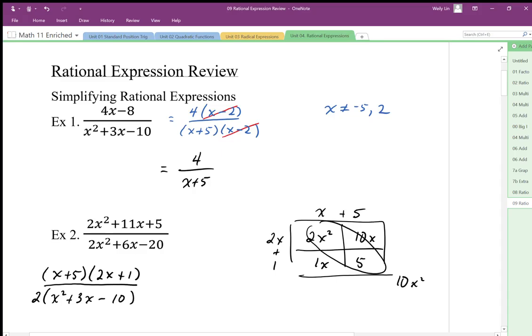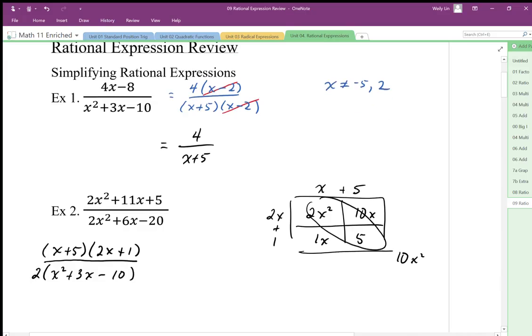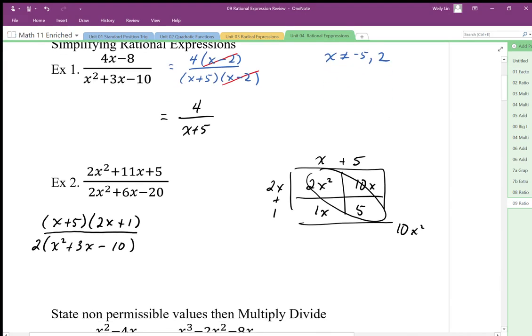Then we're looking for two numbers that multiply to negative 10, add to positive—that's exactly the same as what we had there. We end up with 2 times x plus 5, x minus 2. State our non-permissible values: x is not equal to negative 5, positive 2, same as above.